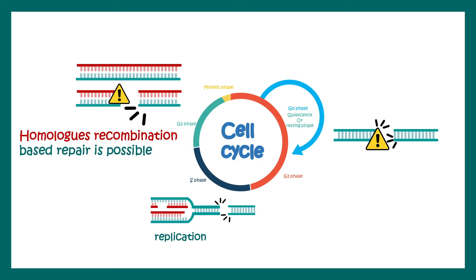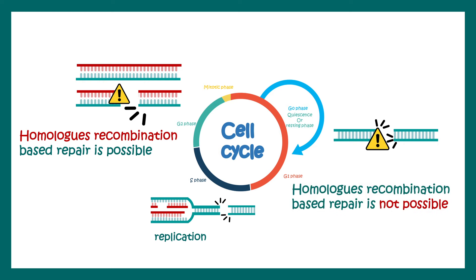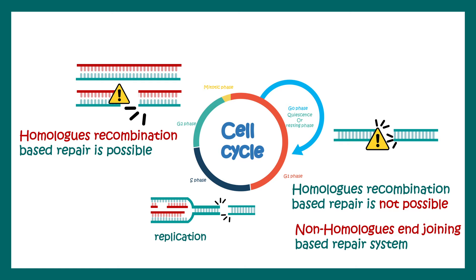So the cell has to repair its DNA without any homologous template. How does it do that? It utilizes the help of the non-homologous end joining based repair system.